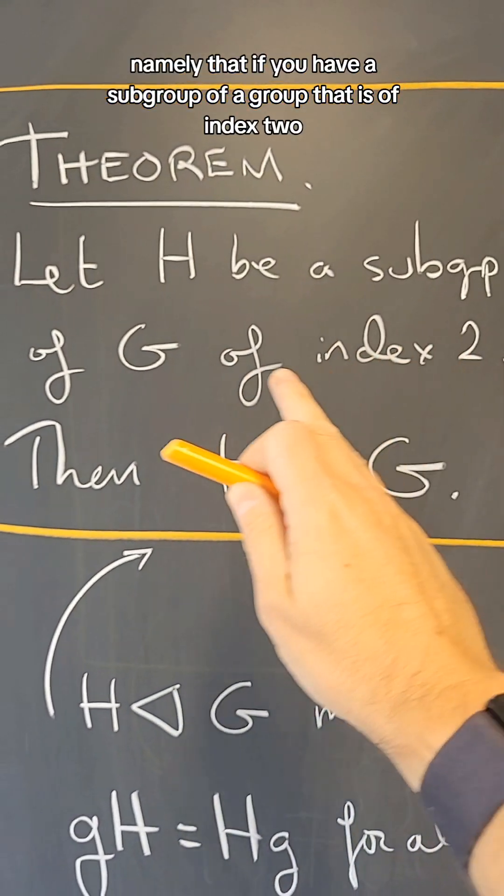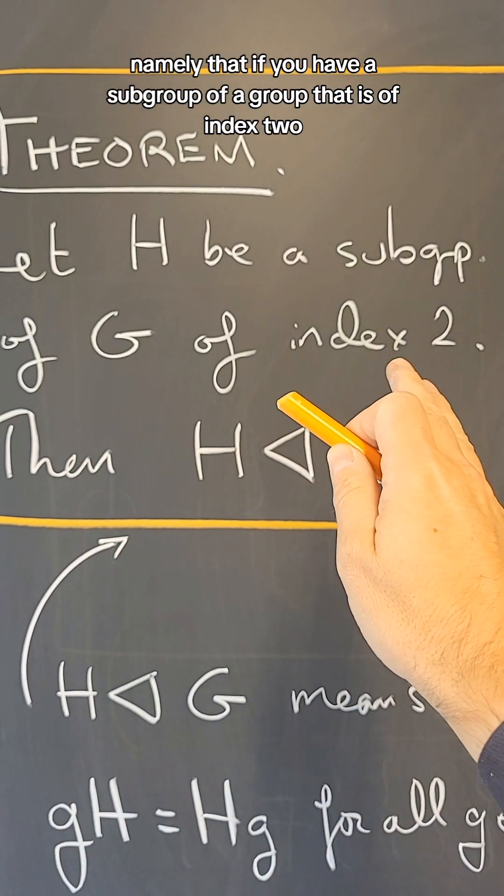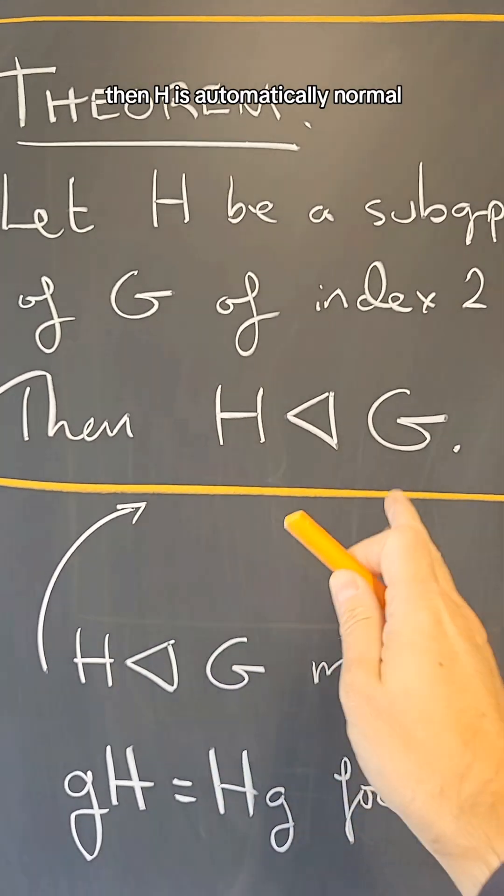Namely, that if you have a subgroup of a group that is of index 2, then H is automatically normal.